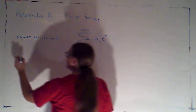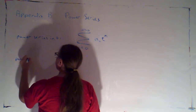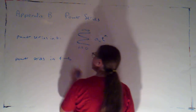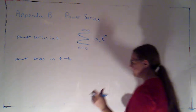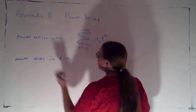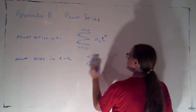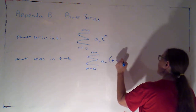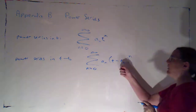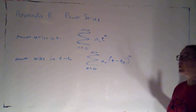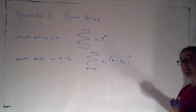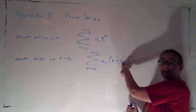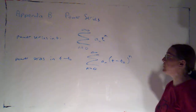Sometimes we choose to work with a power series in T minus T-naught. That would be the sum as n goes from zero to infinity of a sub n times powers of T minus T-naught. We tend to do this when using our series to represent a function and we're concerned with the behavior of the function at and near the point T-naught.